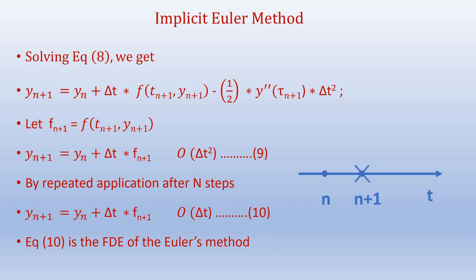By repeated application after n steps, we have y n plus 1 equals y n plus delta t times f n plus 1, and this is of the order of delta t. So equation 10 is the finite difference equation of the implicit Euler method.